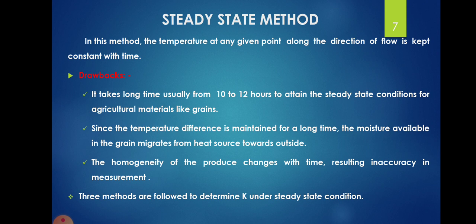This method has certain drawbacks. First, it takes a long time — usually 10 to 12 hours — to attain steady state conditions for agricultural materials like grains. Since the temperature difference is maintained for a long time, moisture in the grain migrates from the heat source toward the outside. Therefore, the homogeneity of the produce changes with time, resulting in inaccuracy in measurement.